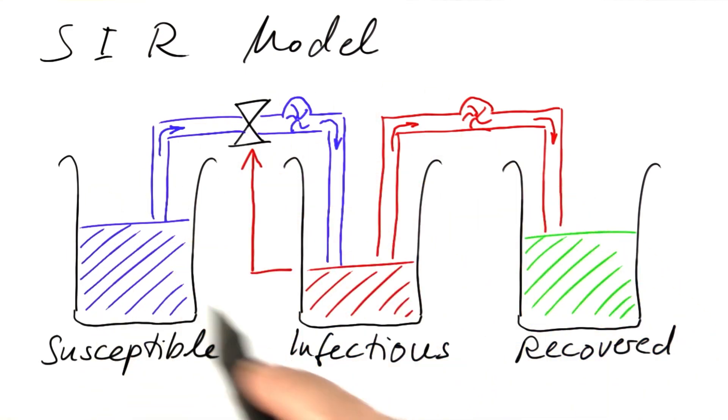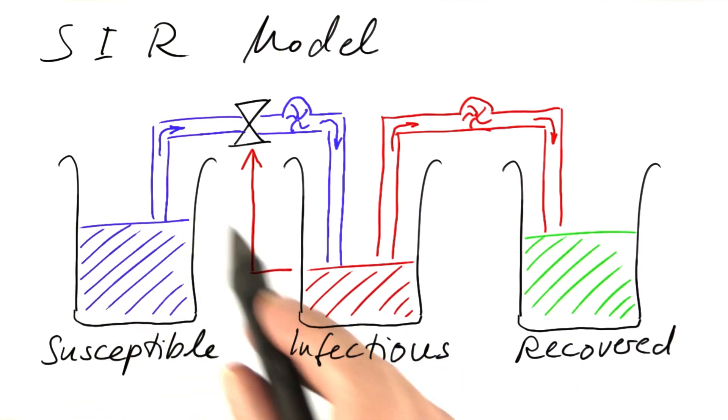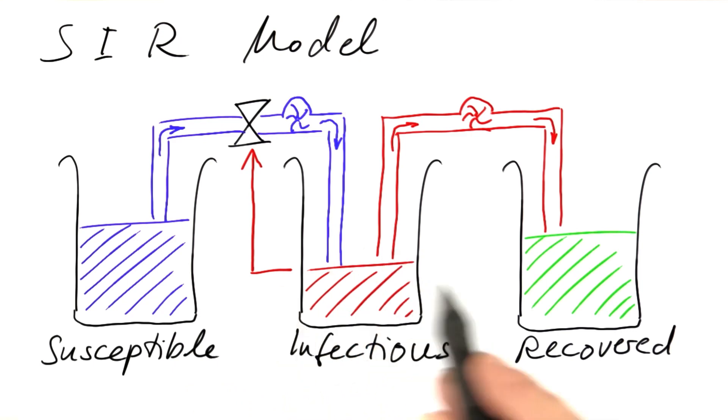This is a much simpler way of dealing with that problem. We forget about the spatial distribution altogether and simply construct a mechanical model, if you will, in which the population consists of three compartments: susceptible persons, infectious persons, recovered persons.